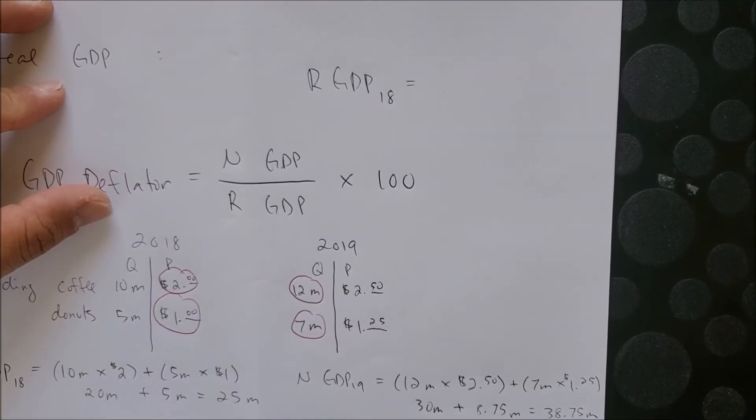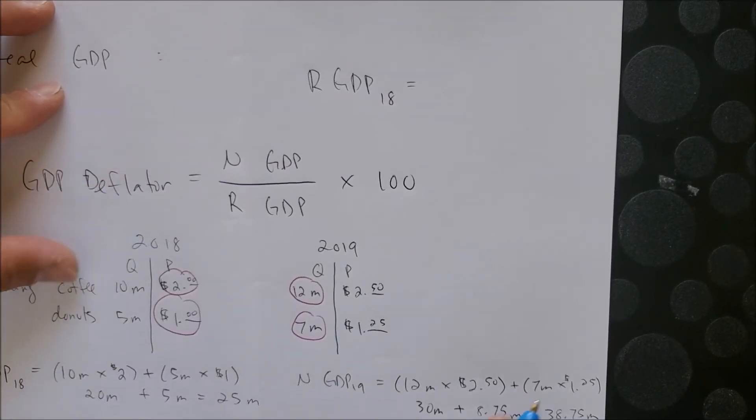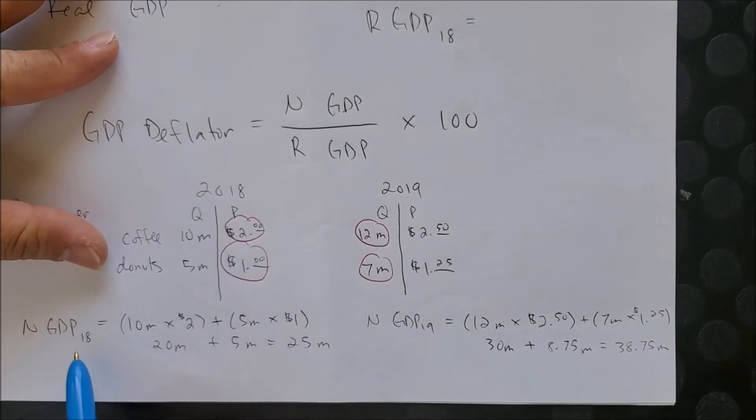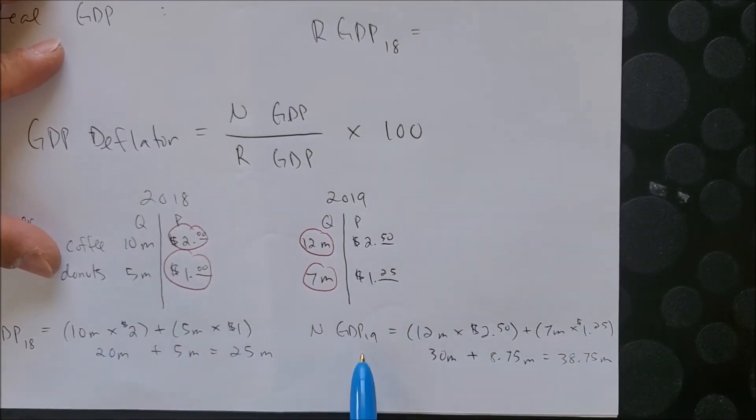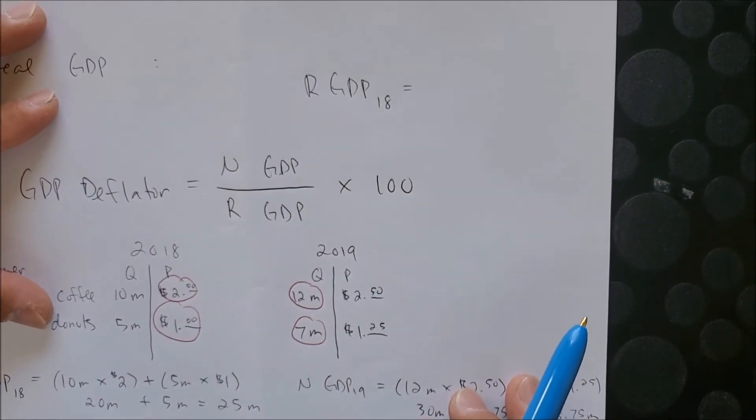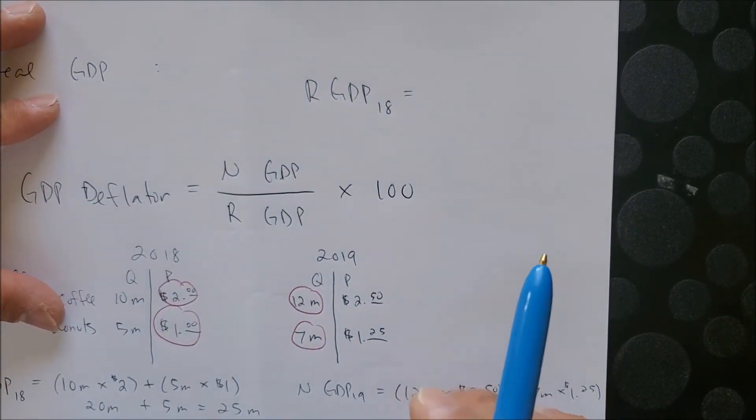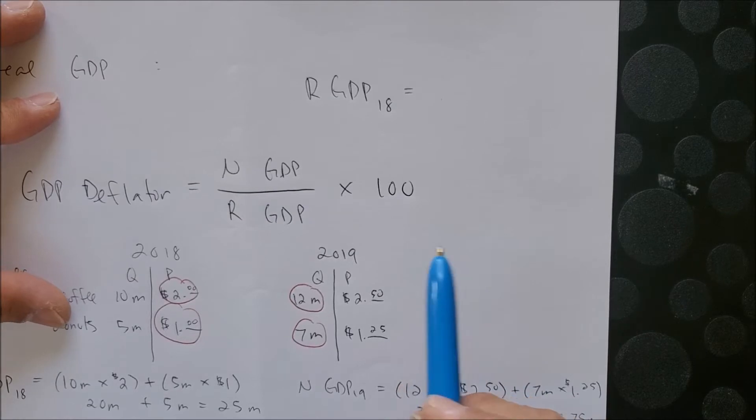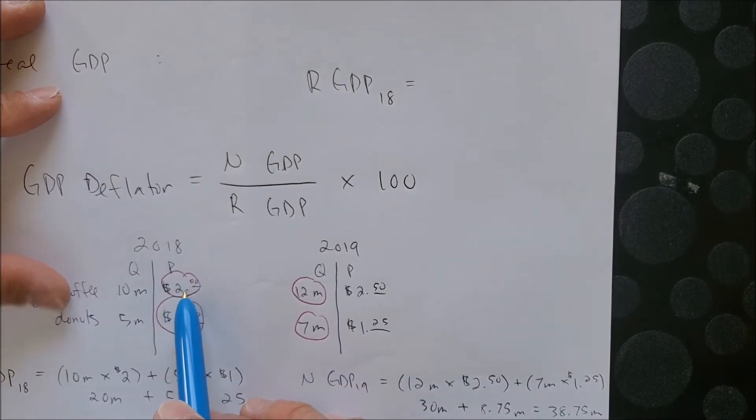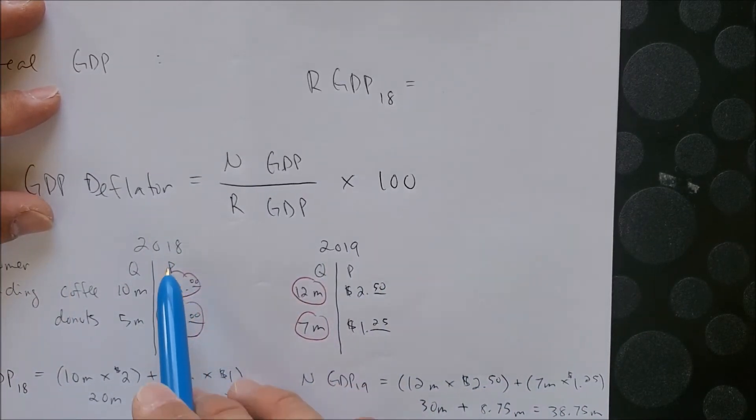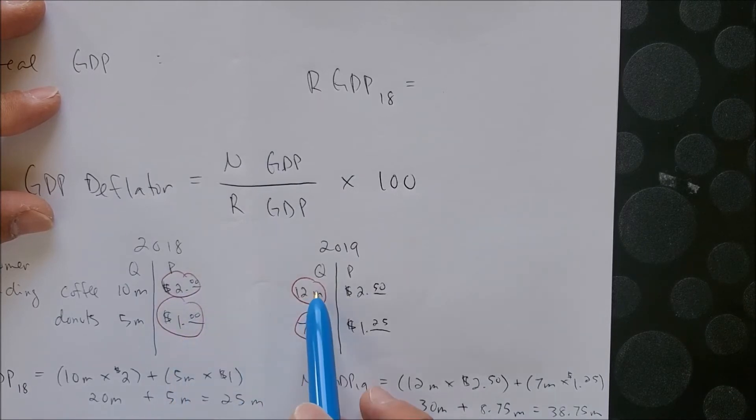Hey folks, part two of the GDP deflator. Now that we found the nominal GDP of 2018 and 2019, we can now move into finding the real GDP when given a base year. Since the base year we have chosen is 2018, we're now going to focus on the price of 2018 and multiply this with the quantity of 2019.